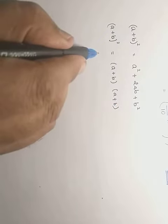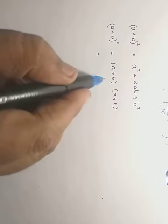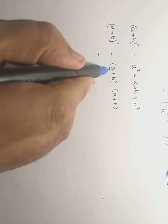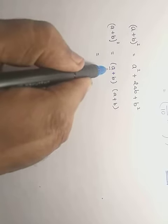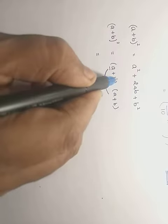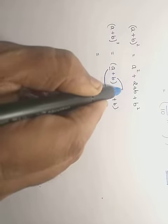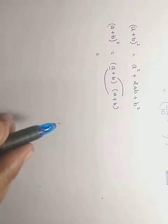Now we will open one of the brackets. a is to be multiplied with (a + b) and similarly b has to be multiplied with (a + b) once.